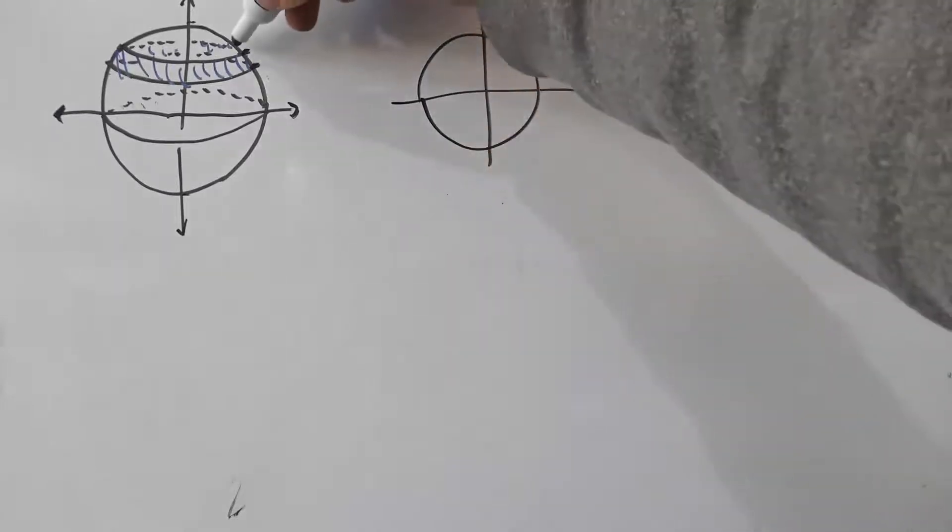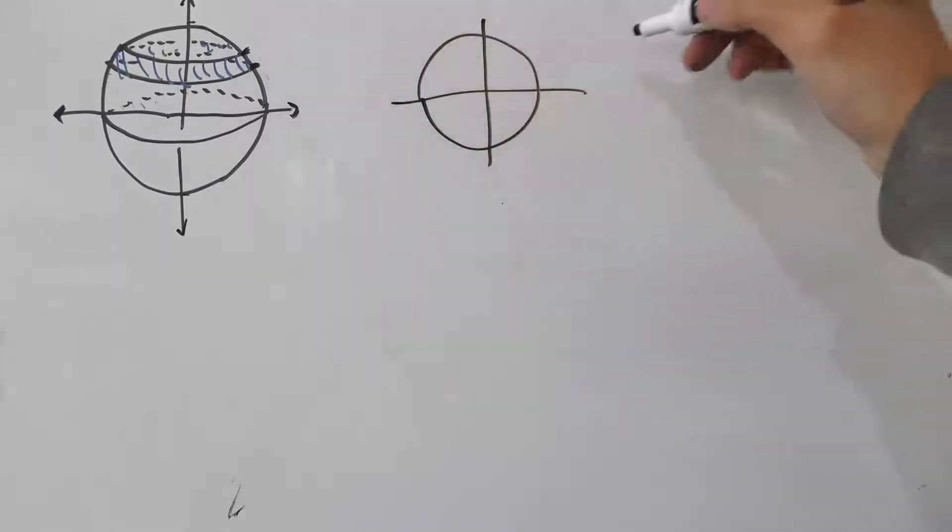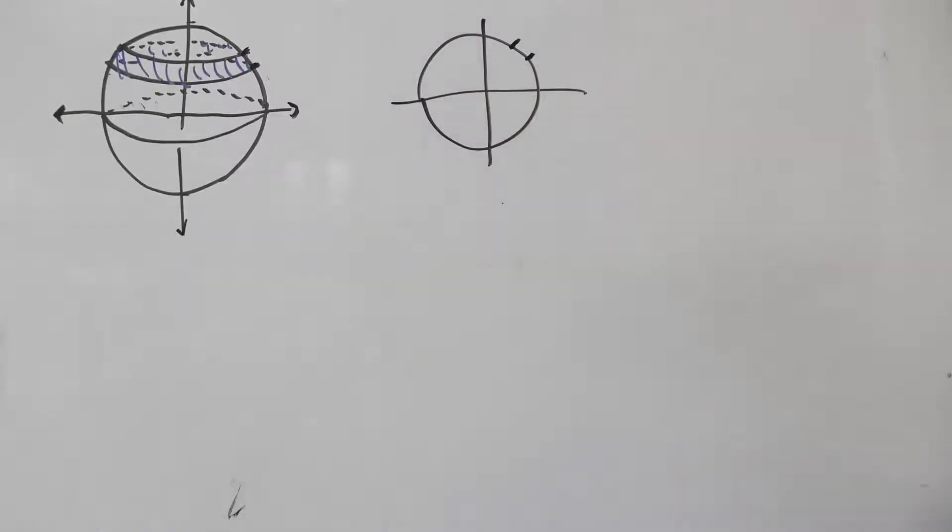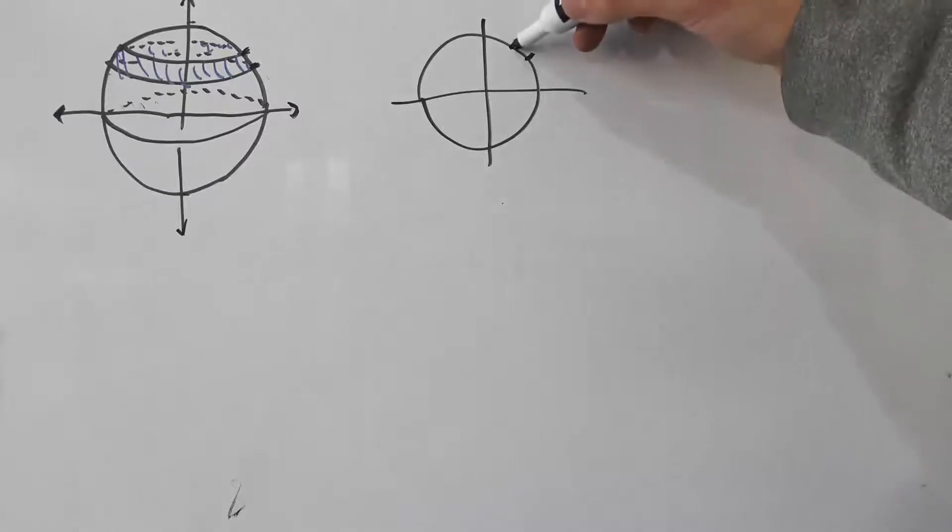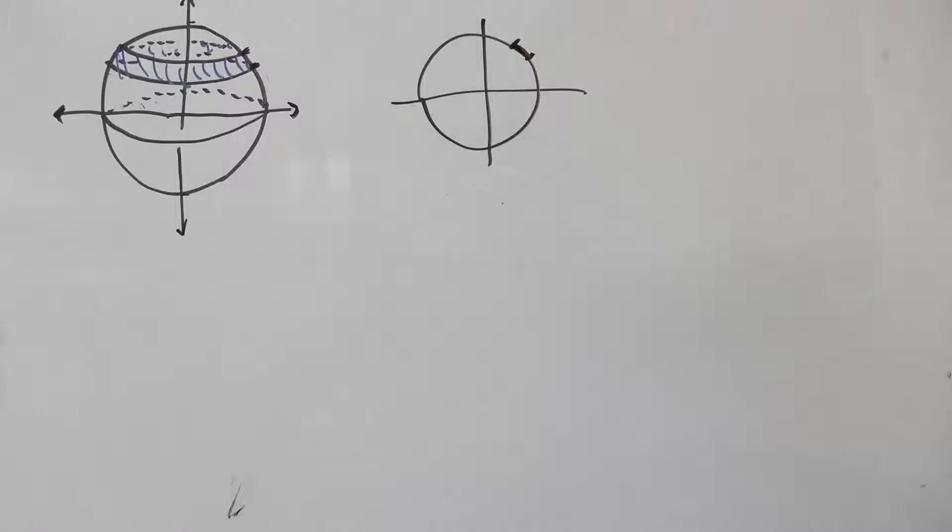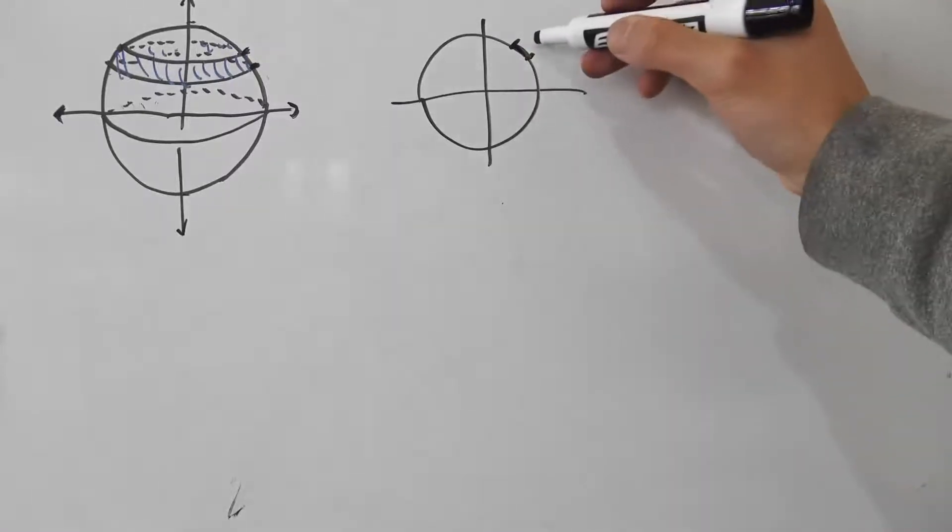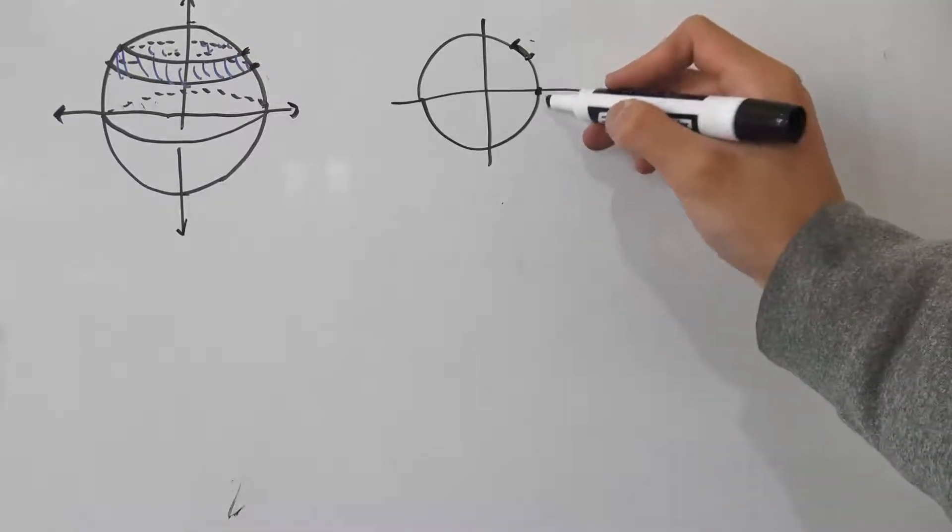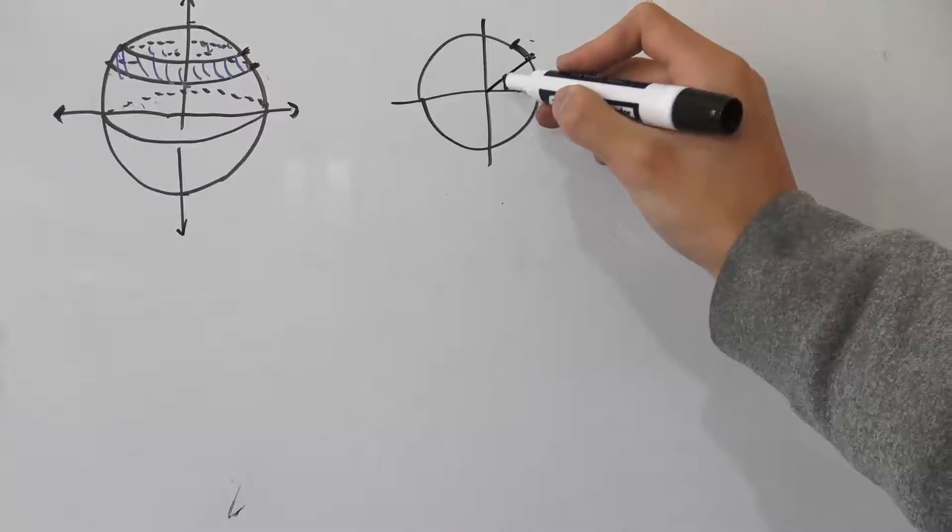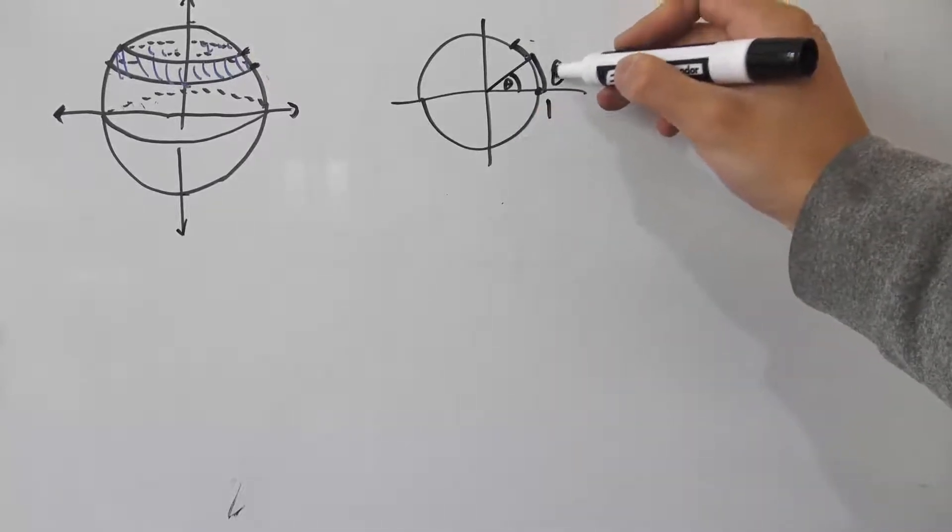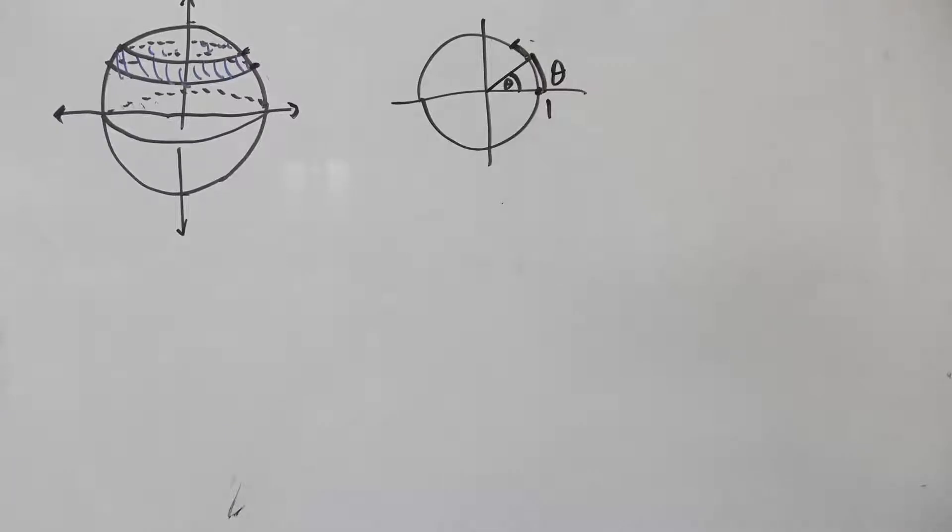If we want to find this little width here, this is what it looks like on the unit circle. Notice that this is kind of going around the circle and this is like an arc length here. Maybe we can use radians to express this little width. If this is a unit circle and we have some angle in radians, then this arc length here is the same thing. That's how radians are defined.